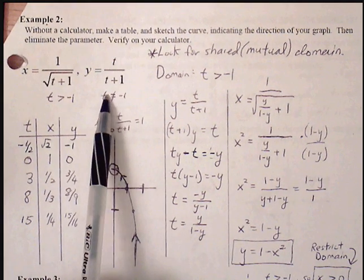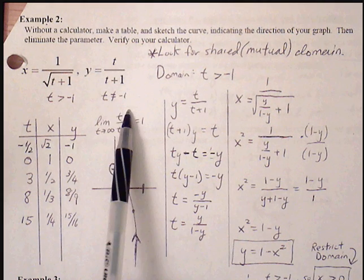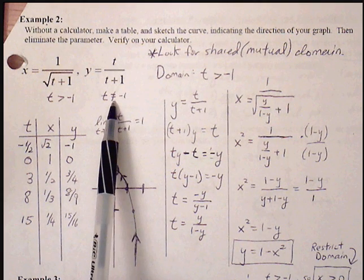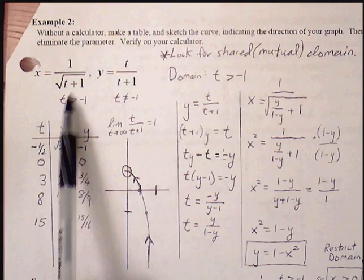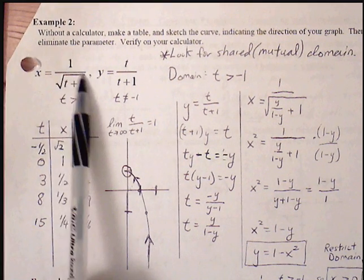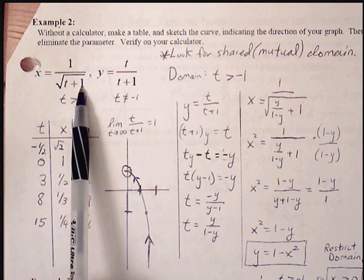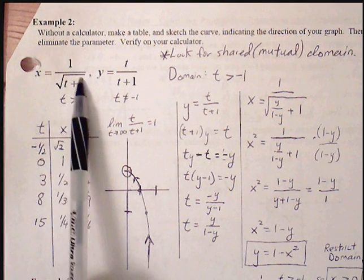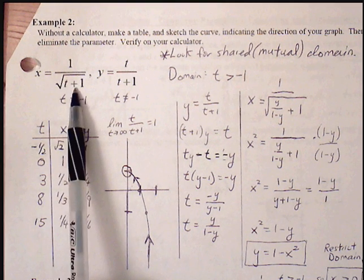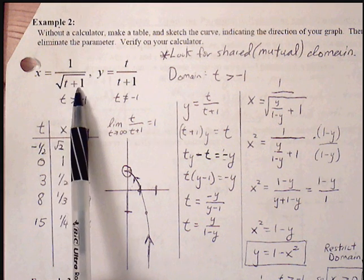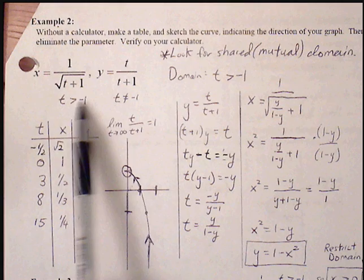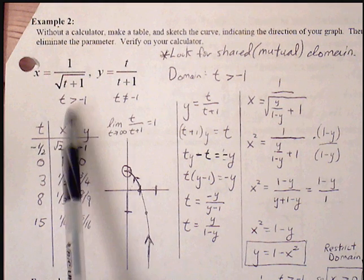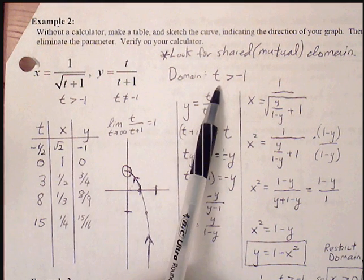So first, for the y, the domain is that t cannot be equal to negative 1. That's the only restriction. But for this equation, not only can the denominator not be zero, but this is under a square root. So we can't have this be a negative value either. So our t has to be greater than negative 1. So between these two, the more restrictive is going to be greater than negative 1. So our domain, t is greater than negative 1.